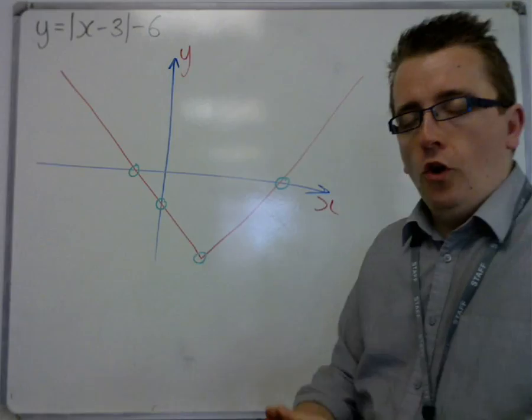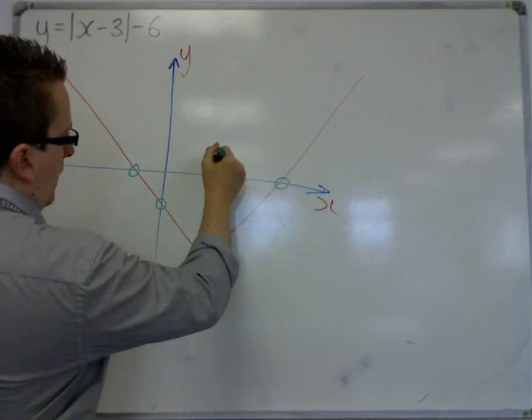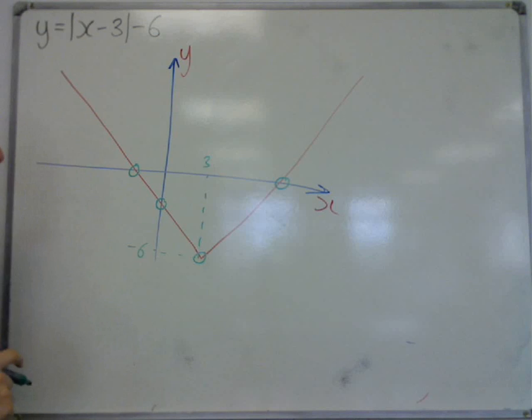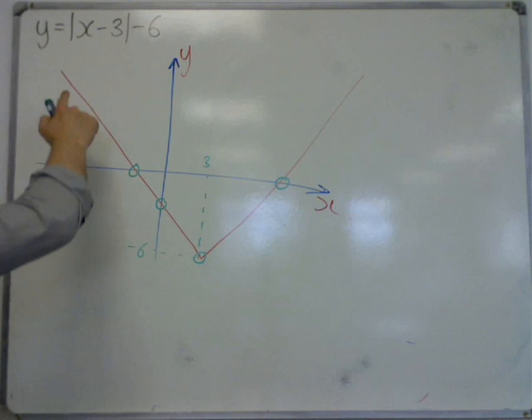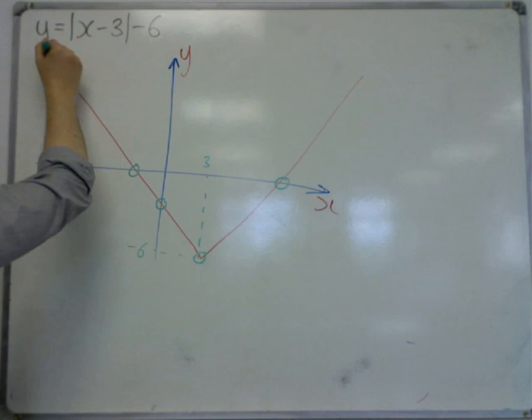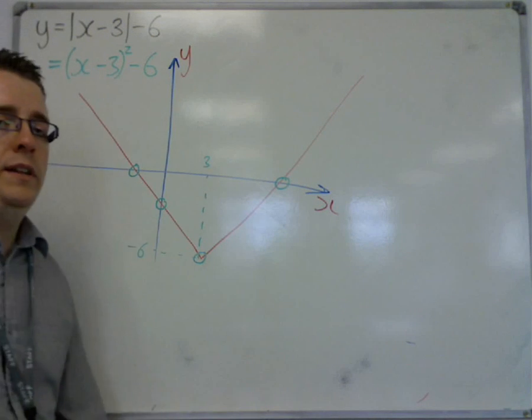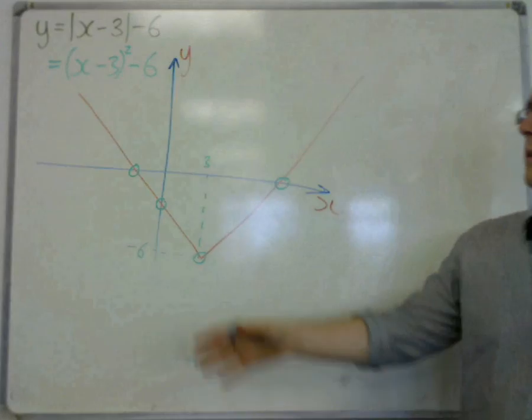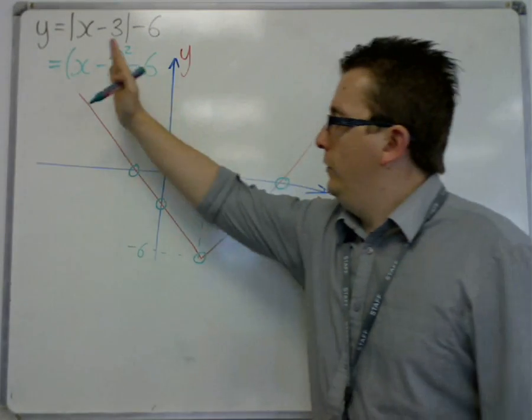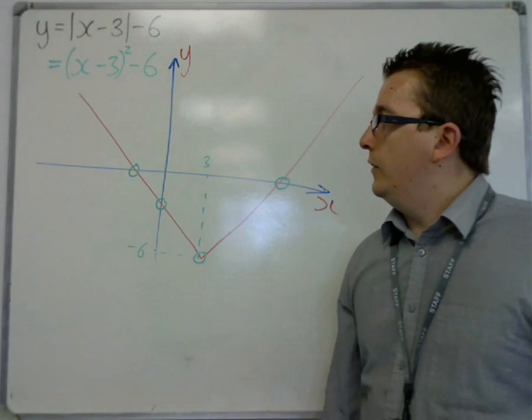Now, if you looked at it on a graphical calculator, you would be able to tell that this is 3 along and 6 down. So 3, minus 6. What I'd like you to do is I'd like you to look at this and say, well, actually, this is actually very similar to something else we've seen. Completed square form of a parabola that has its vertex at 3, minus 6.